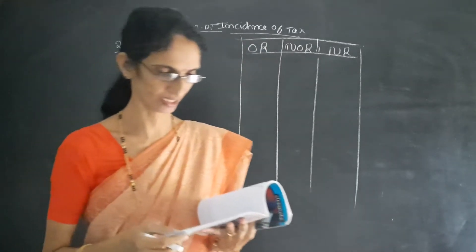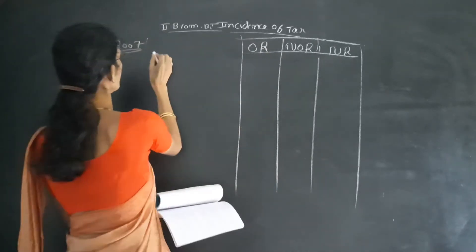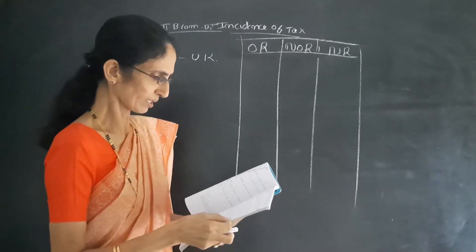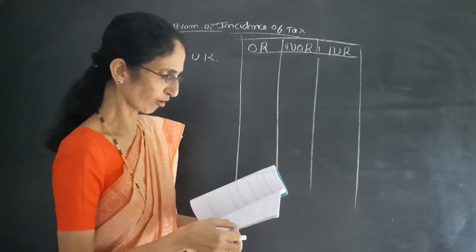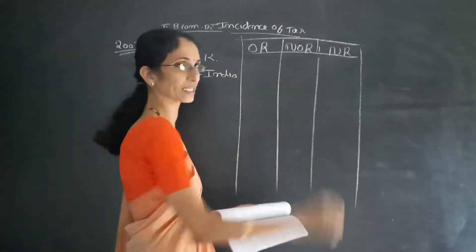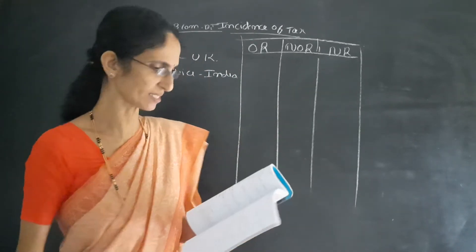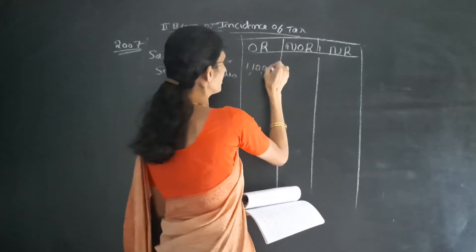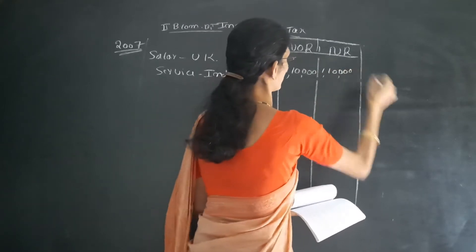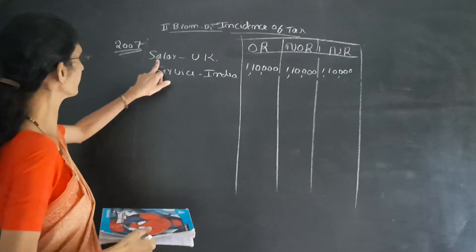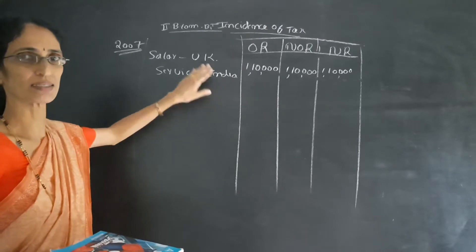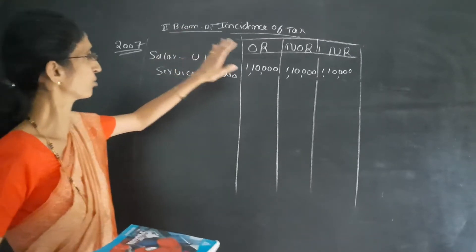The first transaction: Salary received in UK for services rendered in India. This is important — salary due in India. So the amount is 1,10,000. We have to write yes in all 3 columns, because even though it is salary received in UK, the service is in India, which means the amount is due in India.